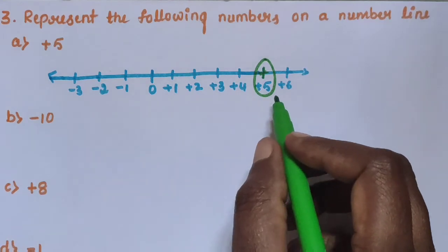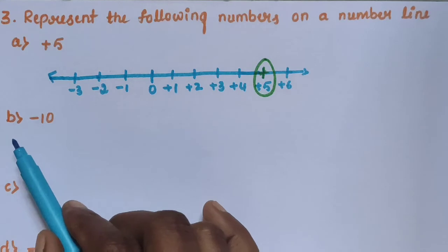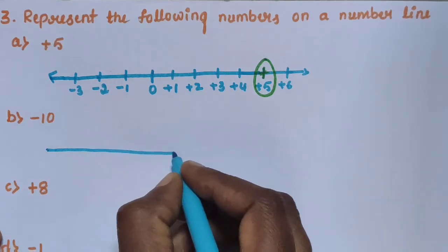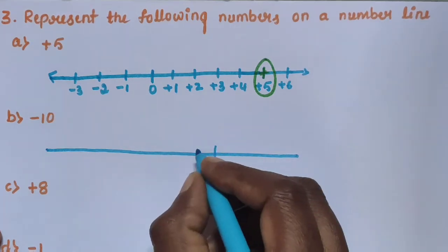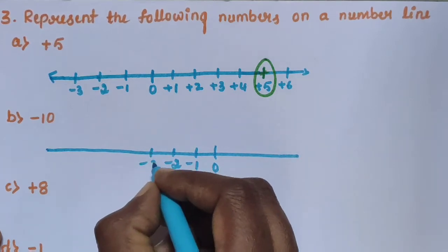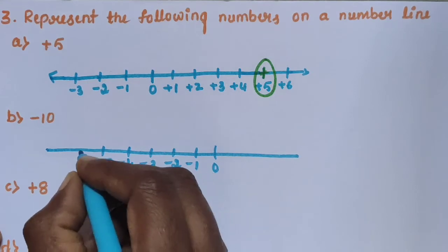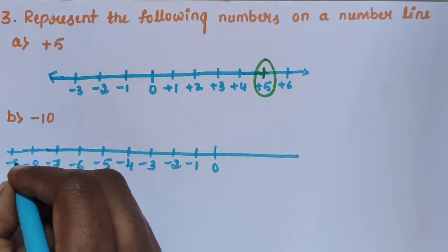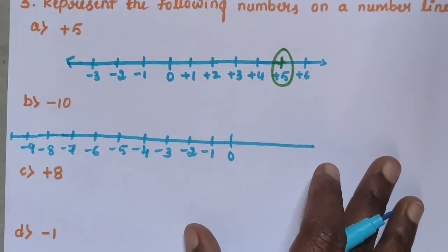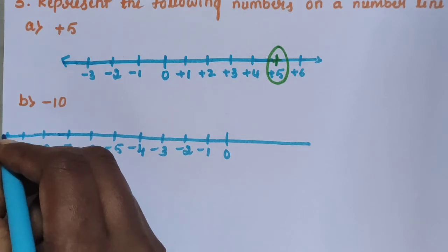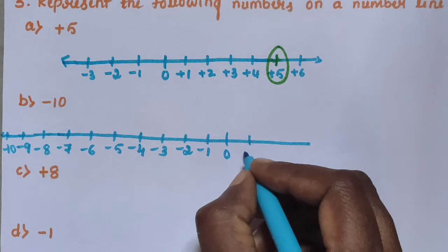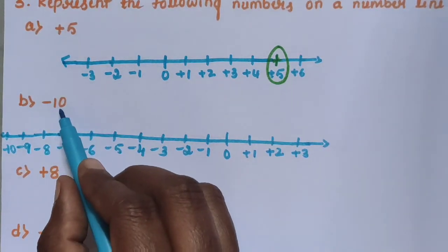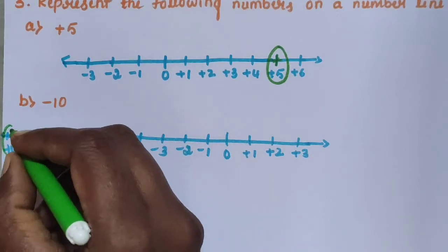Sub-question B: Minus 10. Draw the number line. Starting from 0, mark minus 1, minus 2, minus 3, minus 4, minus 5, minus 6, minus 7, minus 8, minus 9, minus 10 to the left, and plus 1, plus 2, plus 3 and so on to the right. Represent minus 10 on the number line — this is minus 10.